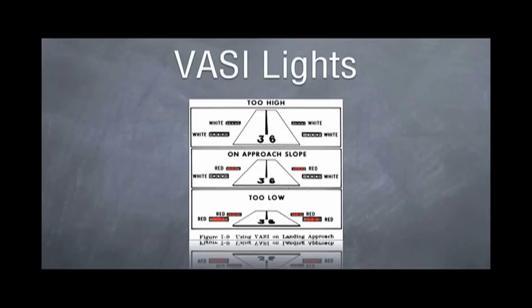If you're on approach slope, you would see white over red. And if you're too low, you would see all red lights.